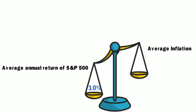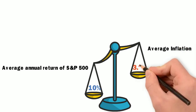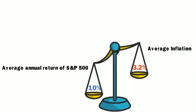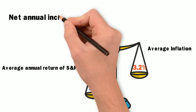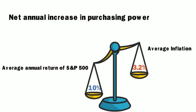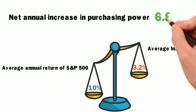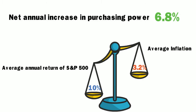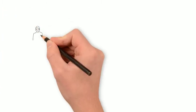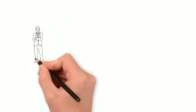On the other hand, the average annual inflation rate in the United States is 3.2%. You can see that investing in the stock market in the US would give you an increase in purchasing power of about 6.8%.